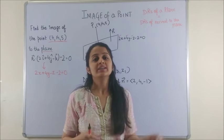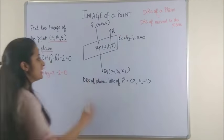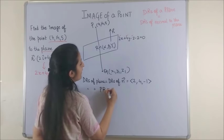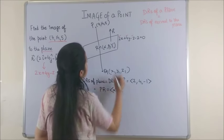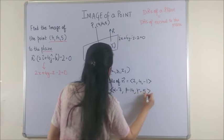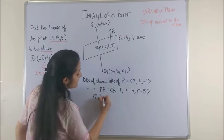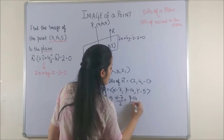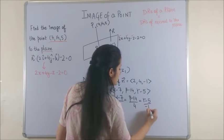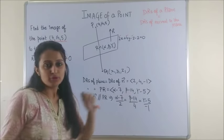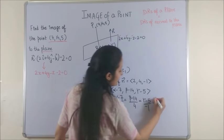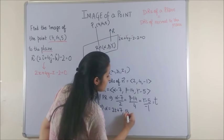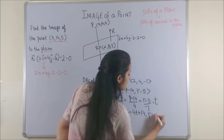So when do we say that the two lines are parallel? When their DR's are proportional. So suppose I represent my point R with α, β, γ then I can say DR's of my line PR are α - 7, β - 14 and γ - 5. Now as we can see this vector n is parallel to my line PR so this implies (α - 7)/2 = (β - 14)/4 = (γ - 5)/(-1). Since when the two lines are parallel their DR's are proportional. So if I equate it with any non-zero constant say T this gives me my α is 2T + 7, my β is 4T + 14 and my γ is -T + 5.